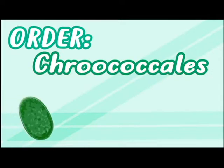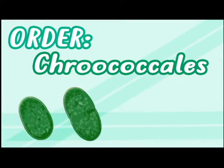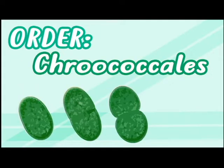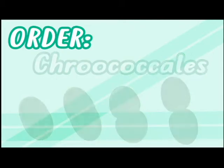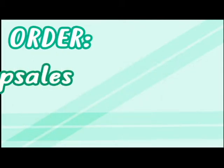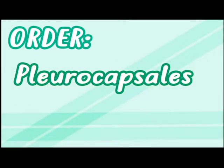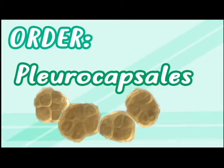Cyanobacteria are traditionally grouped based on their body forms under five orders. Order Chroococcales: solitary cells, aggregations, and colonies not reproducing by spores. Order Pleurocapsales: solitary cells, aggregations, and short filaments reproducing by spores.